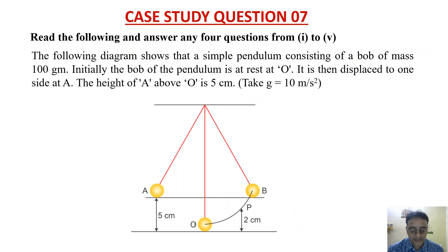The following diagram shows a simple pendulum consisting of a bob of mass 100 gram. Initially the bob of the pendulum is at rest at O, this point. It is then displaced to one side at A, this side. The height of A above O is 5 centimeter and we have to take g equals 10 meter per second square.